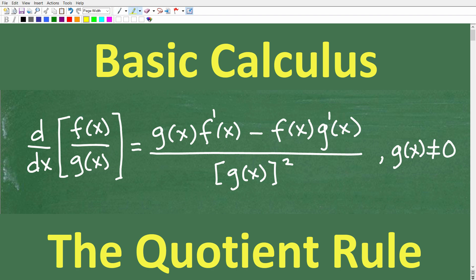The quotient rule looks like this. When we're trying to find the first derivative where there is a quotient — think of a fraction, with a function in the numerator and a function in the denominator — basically when we want to take the first derivative of a rational expression, some sort of fractional expression, we have to apply the quotient rule.